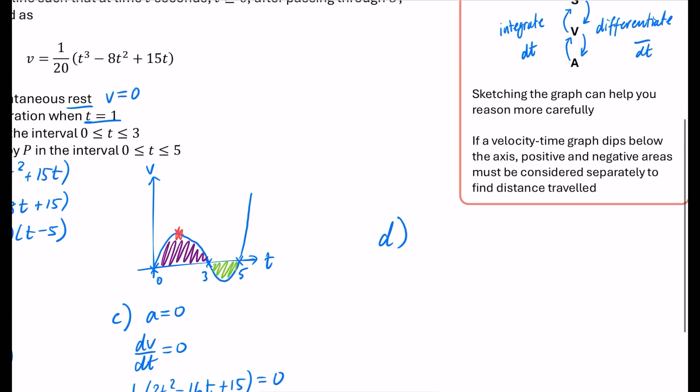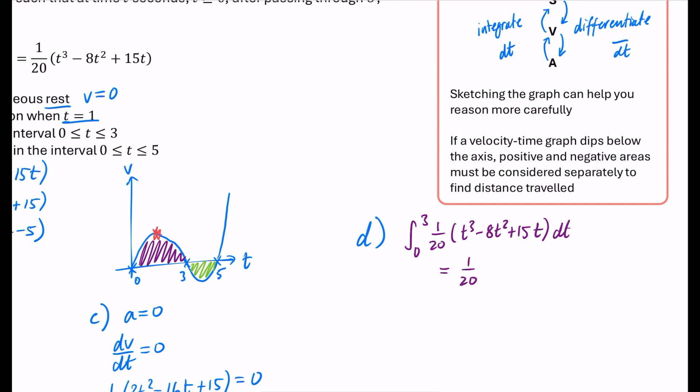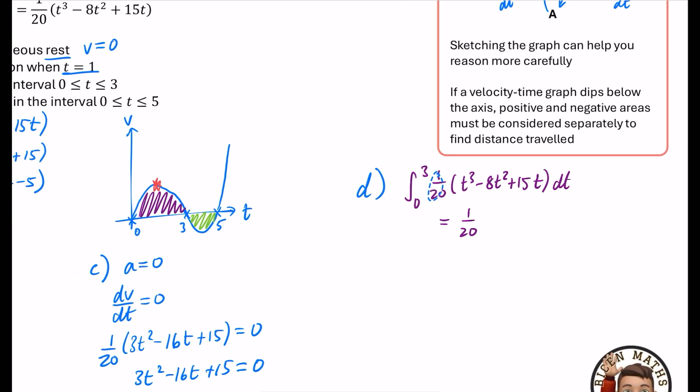For the purple part, we are integrating between 0 and 3, the velocity, which is 1/20(t³ - 8t² + 15t) with respect to t. I'm going to put that 1/20 out to the front. When I integrate t³, I get 1/4 t⁴. When I integrate -8t², that would be -8/3 t³. And the 15t is going to go to 15/2 t². Normally, you'd want to show all the substitution with the 3 and the 0, but in mechanics, they're not that fussy.